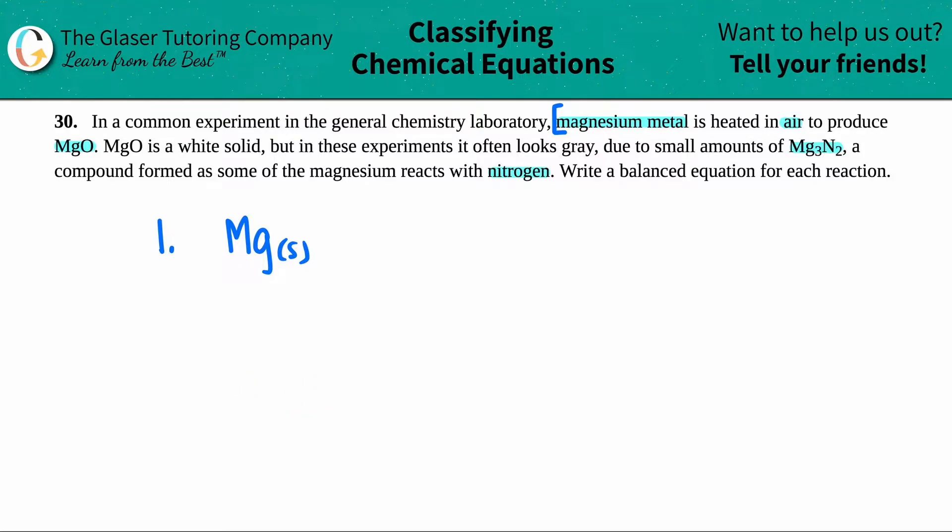Okay, so magnesium metal, so Mg solid, is heated, so it's reacting. So plus, and it's reacting with air. Air is not on the periodic table, but let's see. And they say that it's going to produce, so I know that I'm going to yield MgO. So that's my compound, MgO. They tell us that MgO is a white solid. So I know that this guy has to be a solid.